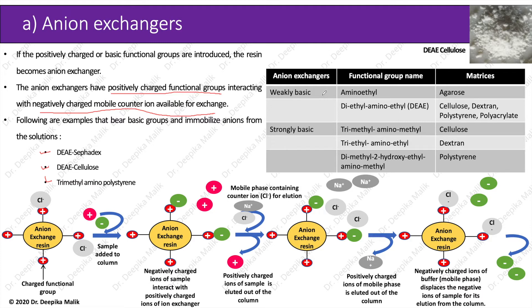For example, if agarose is taken as a resin with aminoethyl functional groups attached to it, it forms a weak anionic exchanger. Similarly, diethylaminoethyl functional groups can be attached to various matrices like cellulose, dextran, polystyrene, and polyacrylate. For strong anionic exchangers, trimethylaminomethyl is attached to the cellulose resin, triethylaminoethyl functional group is attached to dextrans, and dimethyl-2-hydroxyethylaminomethyl functional group is attached to polystyrene.